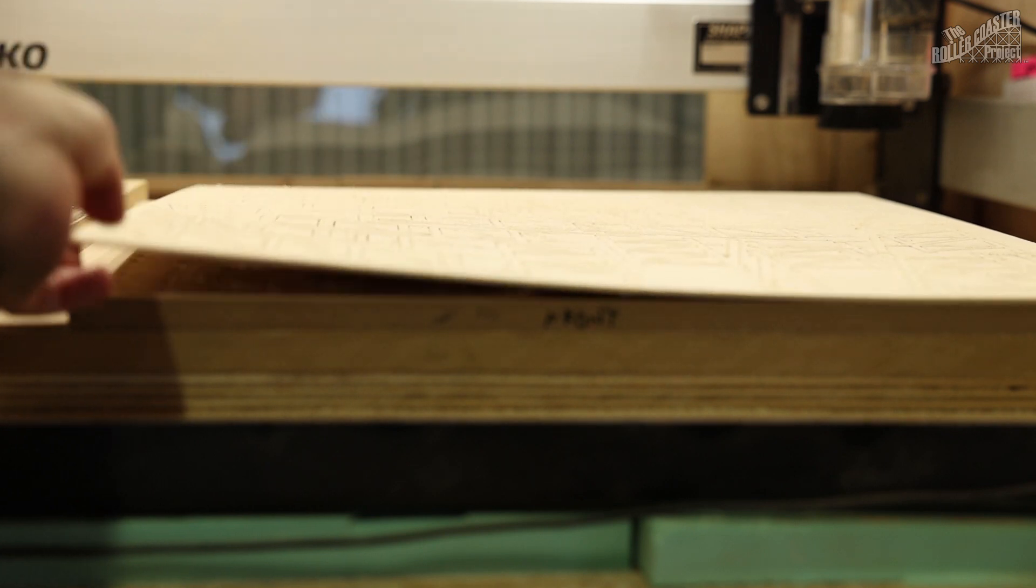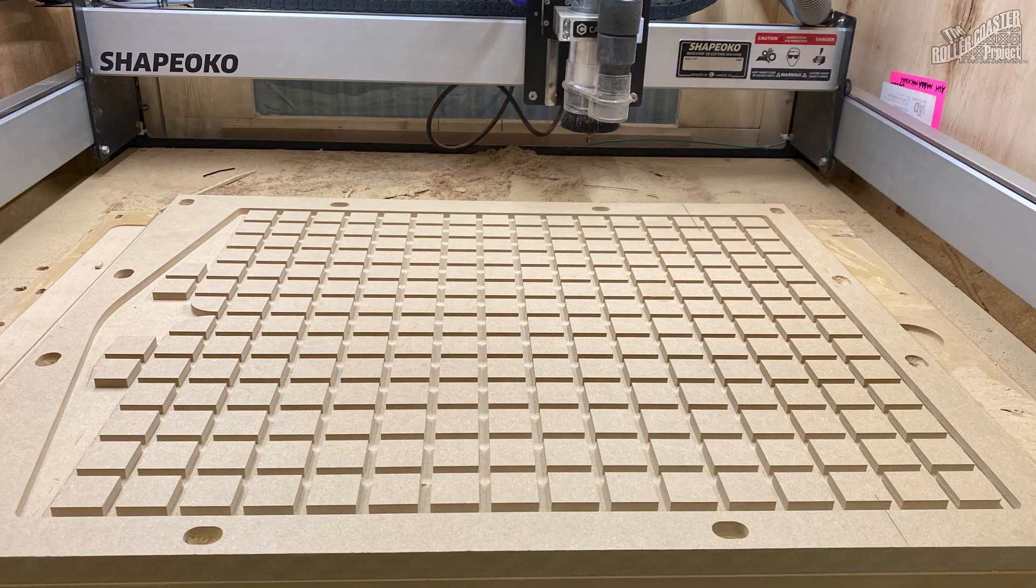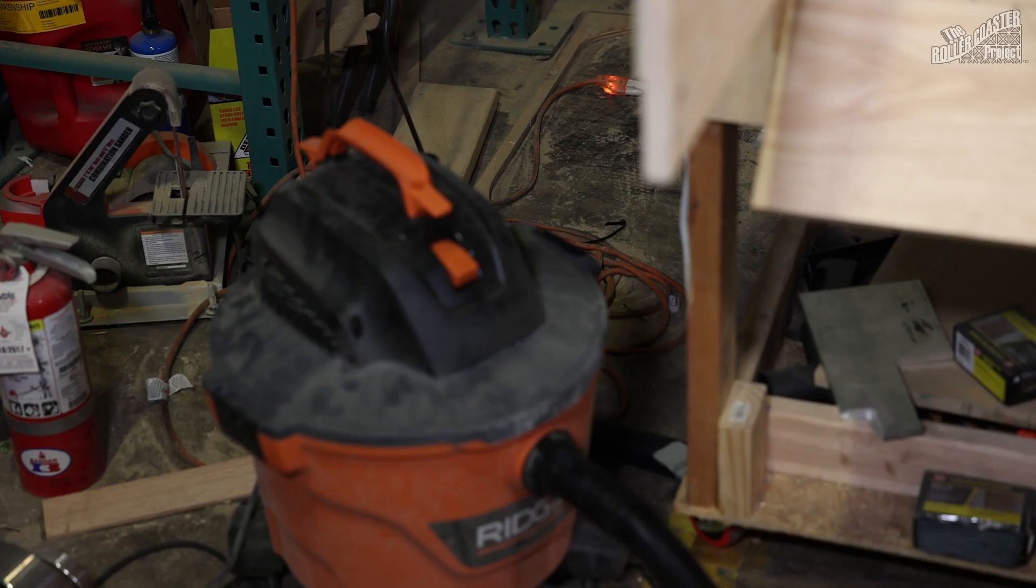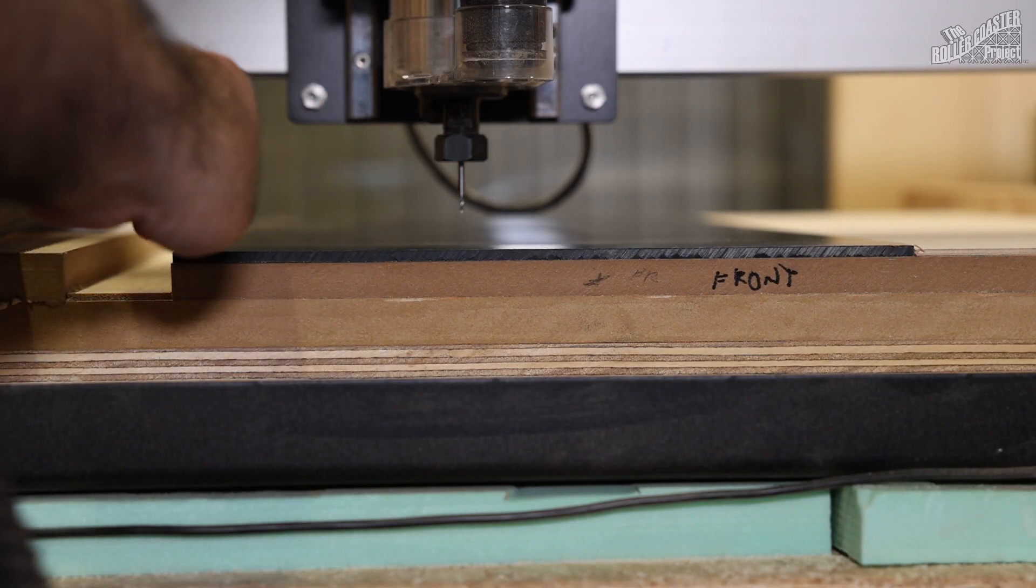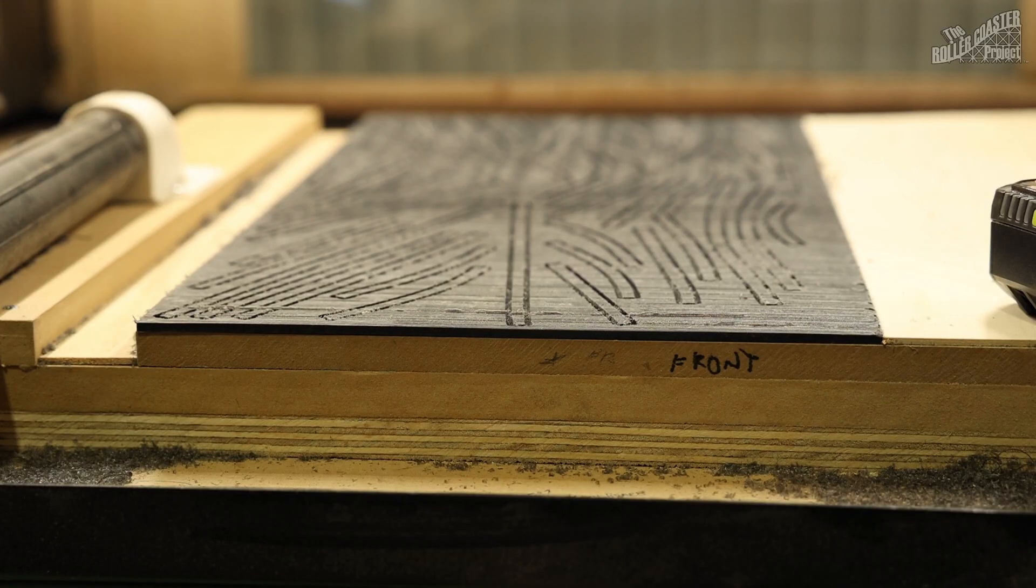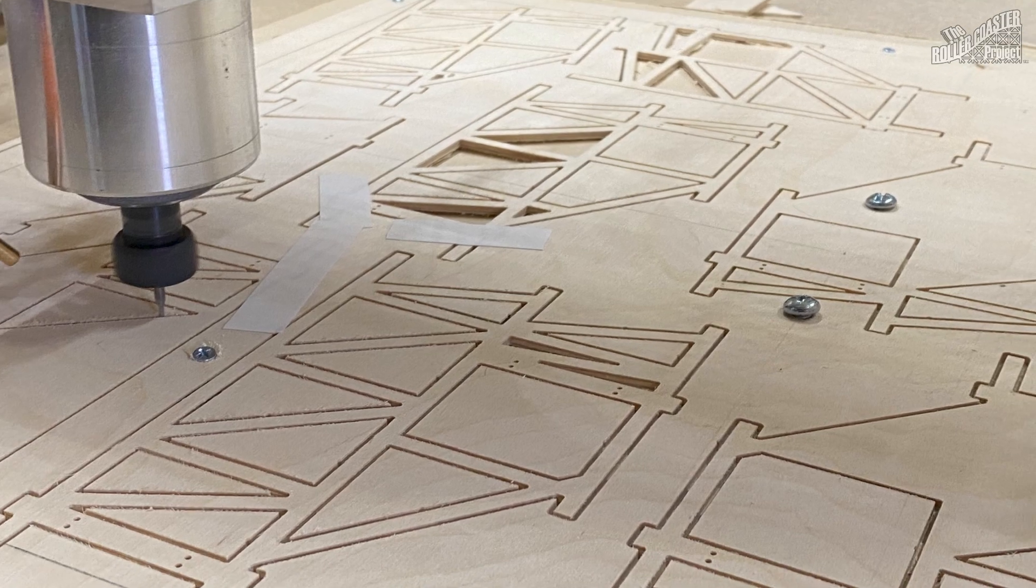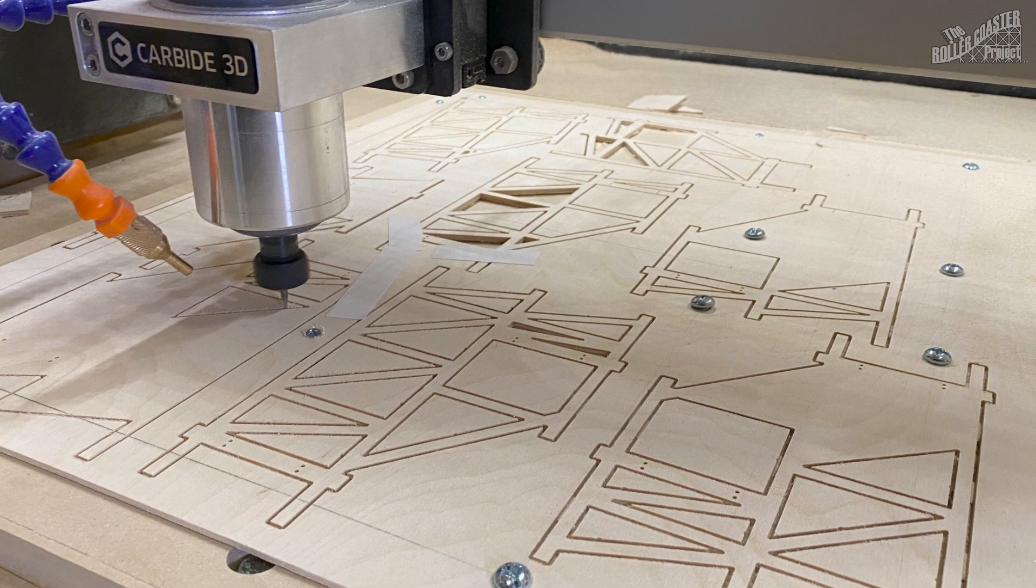One thing that's different this time around than the last time is how I'm holding the material down to cut it out. I spent a few weeks creating a vacuum table to hold down the thin sheet lumber and plastic, which speeds up my workflow and allows me to maximize the use of my material. The previous supports were cut out using double-sided tape and some extra screws. Amateur hour.